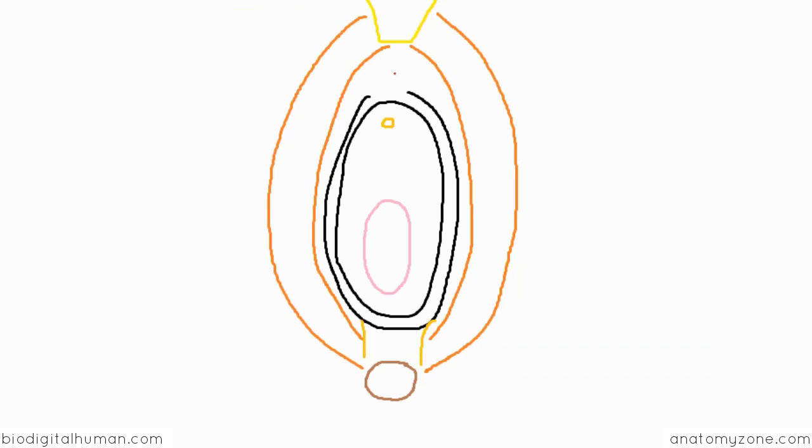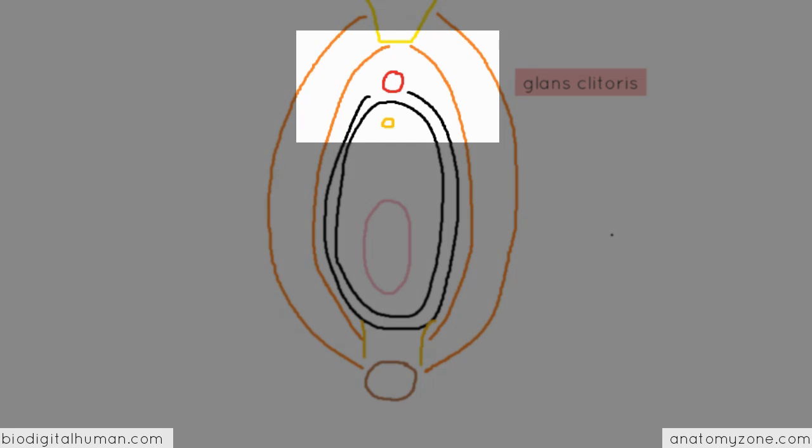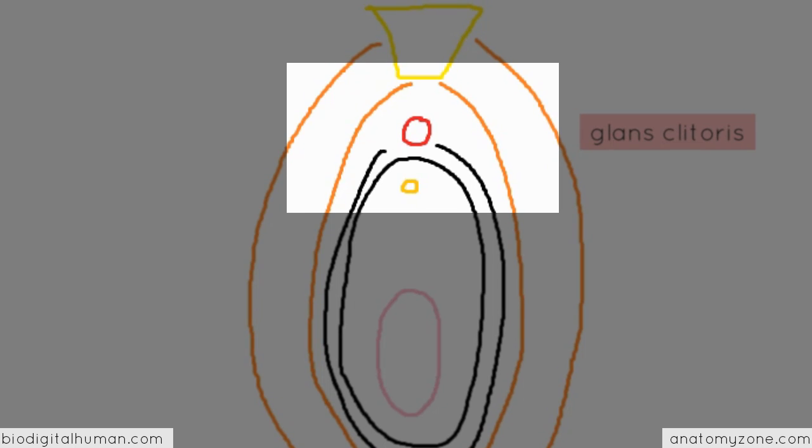So anterior to the urethral orifice, you've got the glans clitoris. And the labia minora form folds around the glans clitoris. At the anterior end of the labia minora, they bifurcate to surround the glans clitoris.